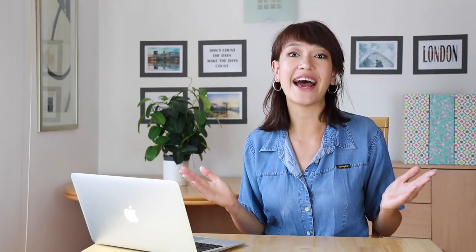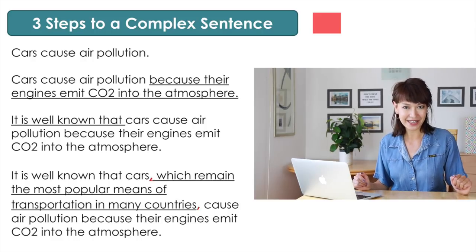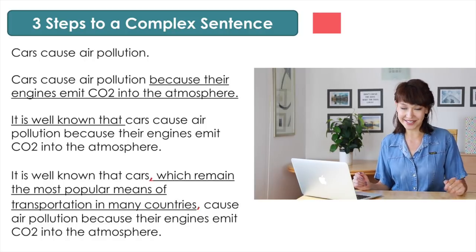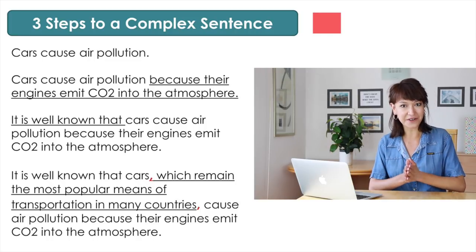That's how we wrote a highly complex sentence in three easy steps. Do you think you could write a sentence like this? Try and post your sentence in the comments below. And if you do it in the first 24 hours after this video is published, I'm going to check your sentence and correct mistakes. I also want to make sure that you don't think all your sentences have to be complex. You can use a combination of simple and complex sentences and get a top score. Just make sure all your sentences are grammatically correct and easy to understand. If ever in doubt, use this rule: simple and correct is better than complex and wrong.